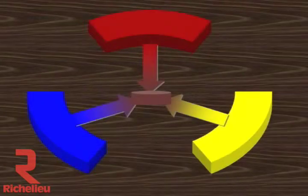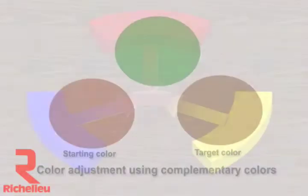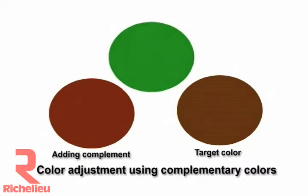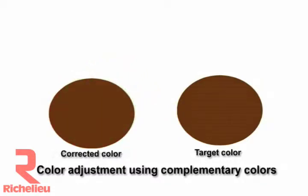It should be noted that mixing all three primary colors will actually yield a brown shade, due to the fact that it is not so easy to get perfect colors in perfectly equal intensities. Still, the system will work to help us adjust colors. For example, the mixed color is redder than the target color. In order to make the mixed color less red, or to neutralize some of the red, we'll add the complementary color of red, which is green, or one could say blue and yellow. Notice that the red was diminished by the green and that the colors now match.